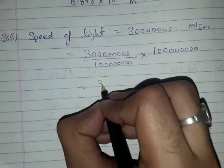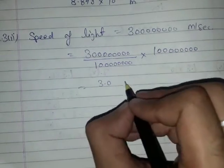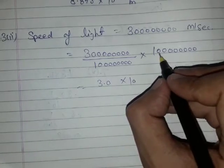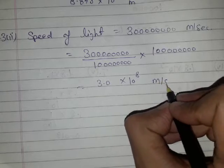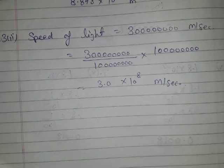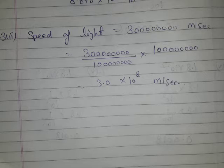If you divide this, it will become 3.0, and here there is 10 raised to the power eight. So 3.0 times 10 to the power eight meters per second is the speed of light in standard form of number.